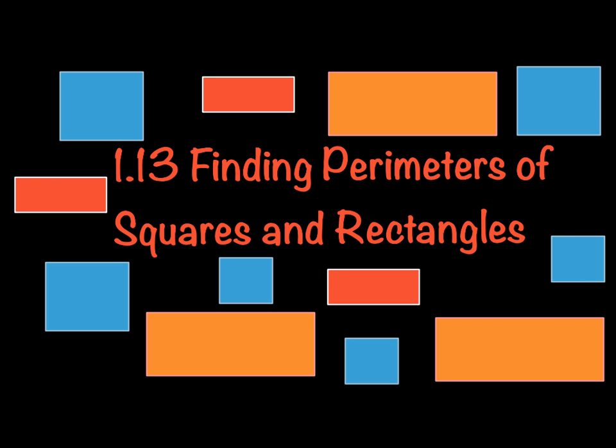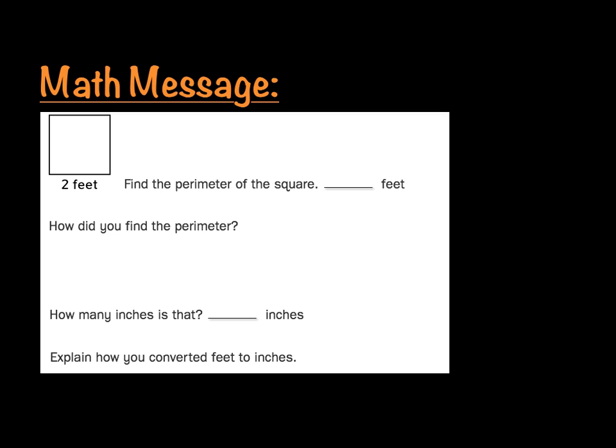Today we're going to be talking about lesson 1.13, Finding Perimeters of Squares and Rectangles. Your math message today that I want you to think about is this: we have a picture of a square. Find the perimeter of the square in feet. How did you find the perimeter and how many inches is that? Explain how you converted feet to inches.